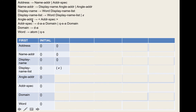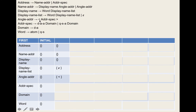Now we calculate follow sets. We initialize all follow sets to the empty set. For address, it doesn't appear on any right-hand side. But rule one of follow sets says: if it's the starting non-terminal, add end-of-file to its follow set. So the follow set of address is {$}.